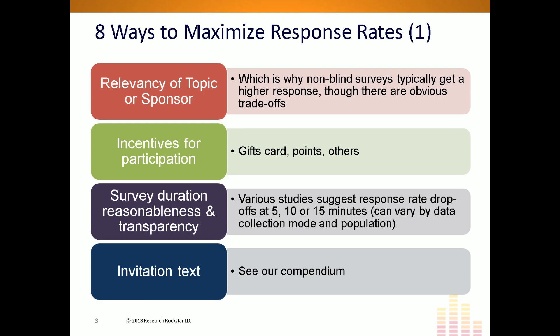The third thing to talk about is survey duration — making sure it is reasonable and being honest about it. There's no bait and switching, because we want to be transparent with people. Not only is it the right thing to do, but we want anybody who takes a survey to have a good experience. We don't want people to feel like survey researchers are trying to squeeze every last second of their time.